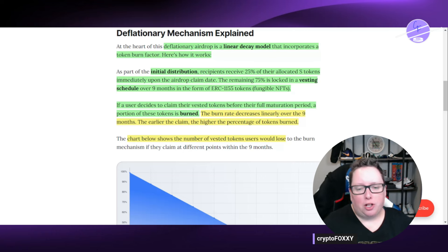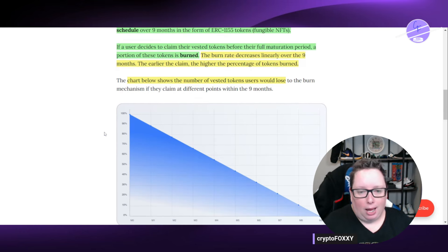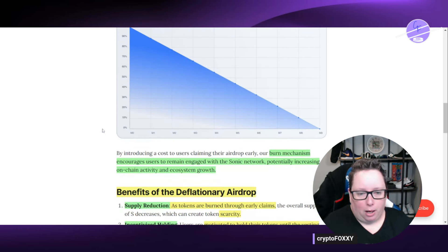If a user decides to claim their vested tokens before the maturation date, a portion of these tokens is burned and the burn rate decreases linearly over the next nine months. The earlier the claim, the higher the percentage of tokens burned. So the chart below is going to show the number of vested tokens users would lose to the burn mechanism if they claim at different points within nine months.